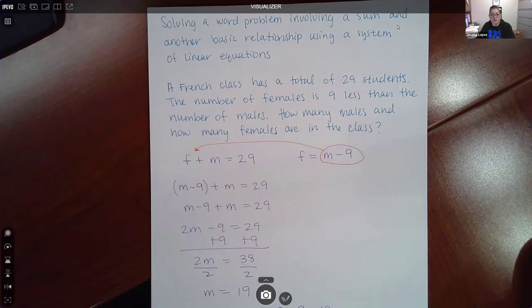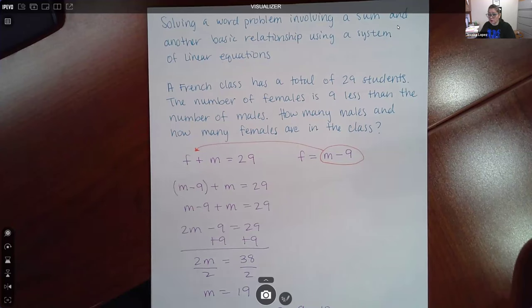For this particular problem we have a French class has a total of 29 students. The number of females is 9 less than the number of males, how many males and how many females are in the class. Essentially, one sentence will give you one equation and another sentence will give you the other equation.